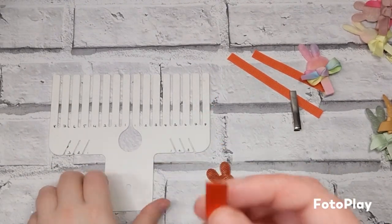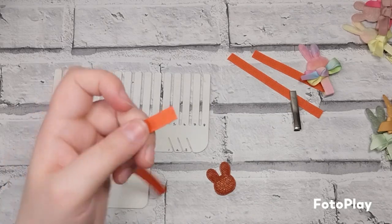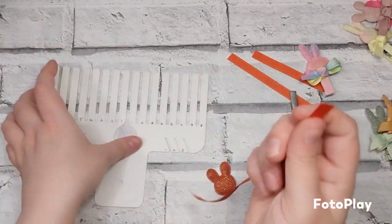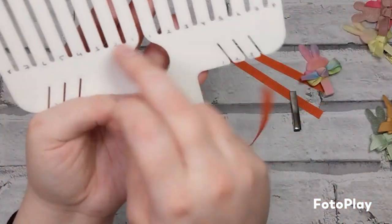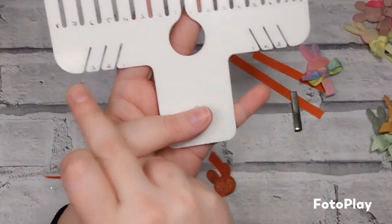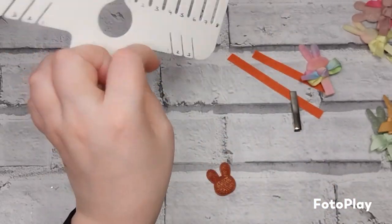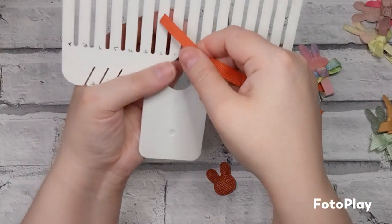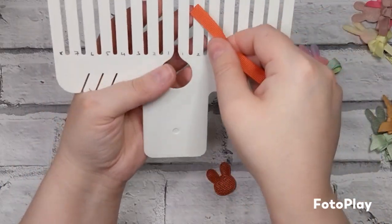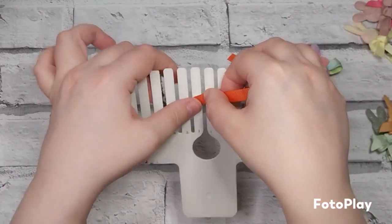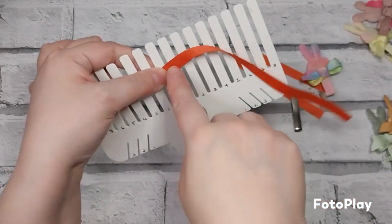We're going to start with the actual bow itself, so take our 9 millimeter ribbon and heat seal the end. I've numbered my template one to eight and one to eight on both sides. We're going to use the two points, so I'm going to use my thumb to hold it on the one.